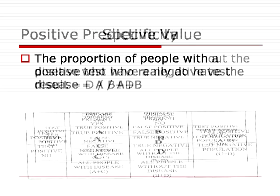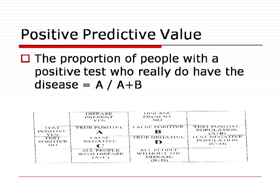What is the positive predictive value of a test? The positive predictive value is the proportion of people with a positive test who really do have the disease. So that's the true positive divided by the true positive plus the false positive — equal to A divided by A plus B.